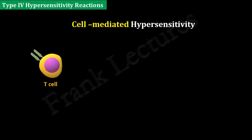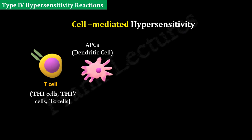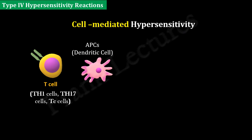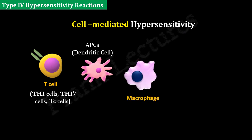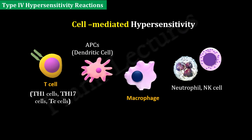These reactions are initiated by T-cells. The main T-cell types involved are T-helper type 1 cells, TH17 cells, and killer or cytotoxic T-cells. Antigens are presented to these cells by APCs such as dendritic cells. The damage to the host is caused by activated macrophages and other leukocytes such as neutrophils and natural killer cells.